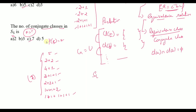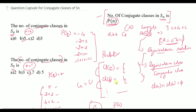What about S6? The number of conjugate classes in S6 is P(6). That is a simple extension. In the next video we will meet again. Please subscribe, like, and share. Thank you so much.